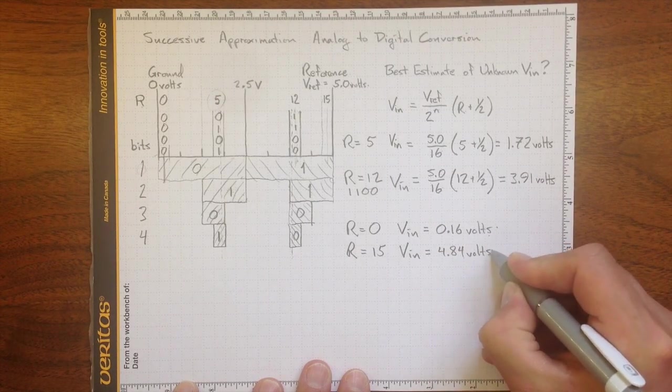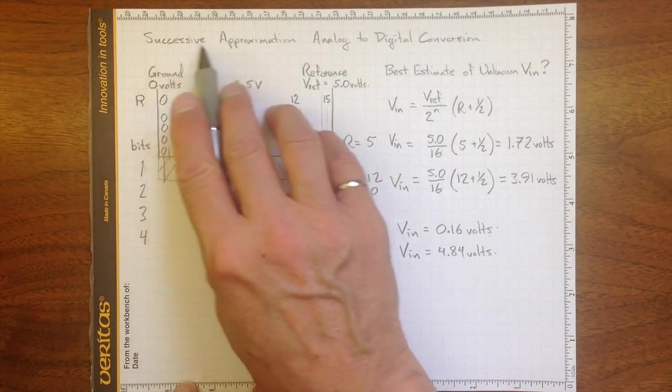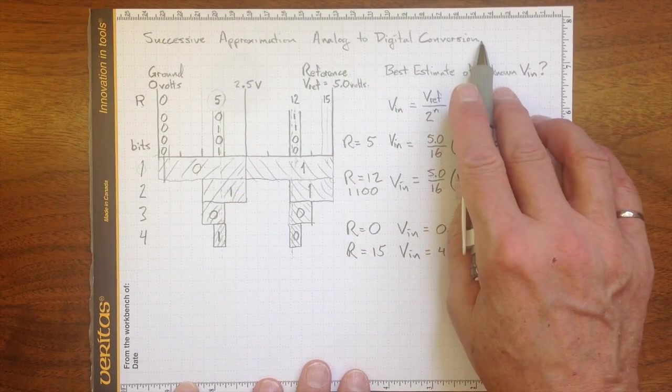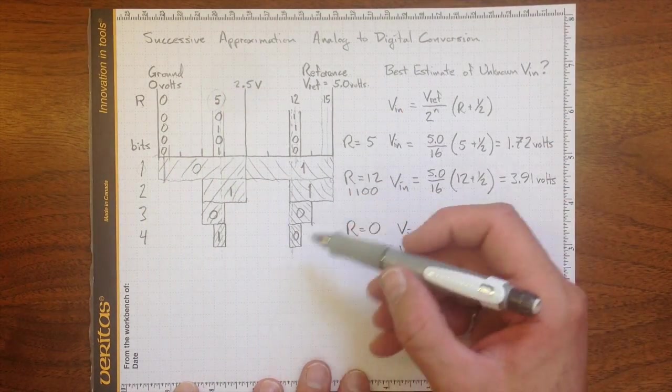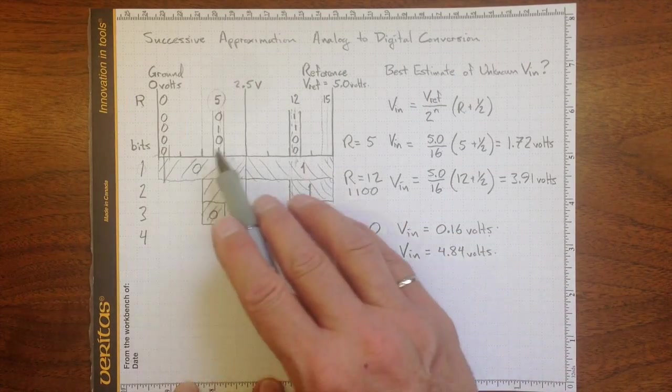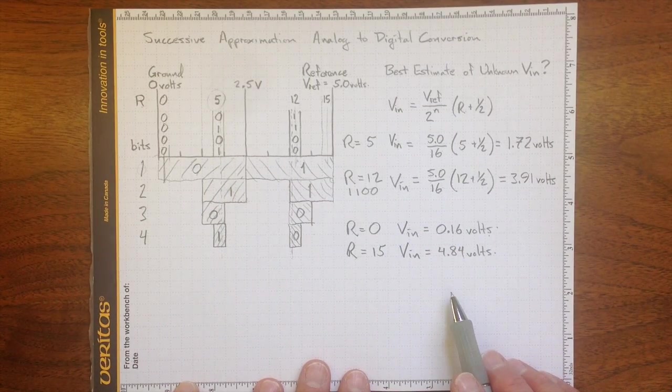So that's how we can estimate an actual voltage input based on our successive approximation analog to digital conversion. And the more bits we have, if we have more than 4, if we have 10 for instance, the more divisions we'll be able to separate the voltage into, and the more accurate our measurement will be.